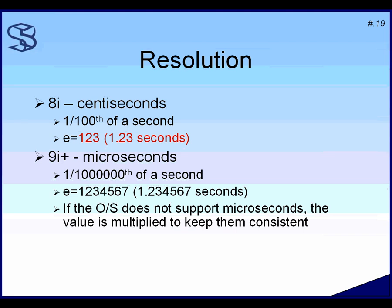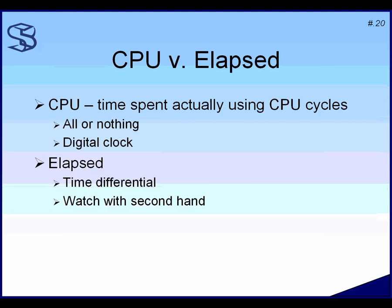For systems still on 8i or older, timing resolution is in centiseconds, so an elapsed time of '1 2 3' means 1.23 seconds. From 9i to 11g it's in microseconds, so you divide by one million to get seconds. If you go from 8i to 9i and elapsed times suddenly go through the roof, your resolution may be slightly off.